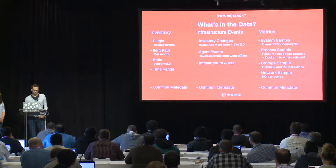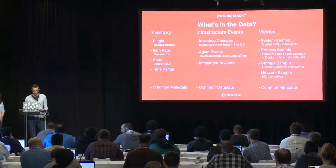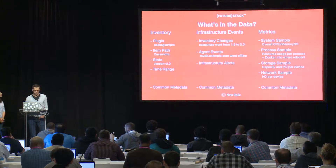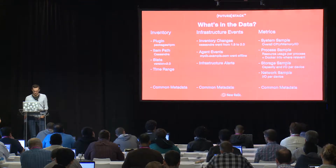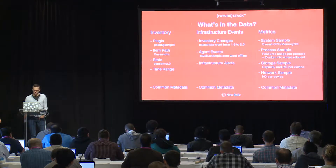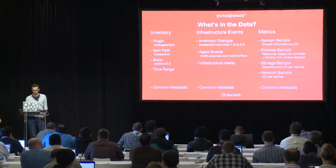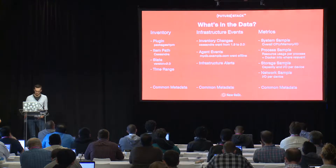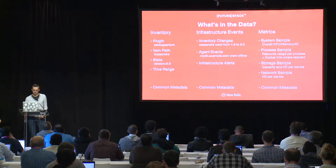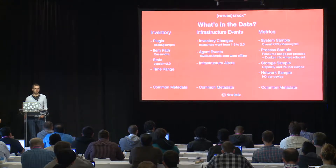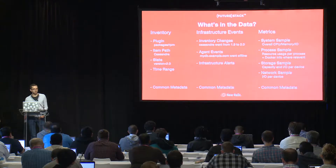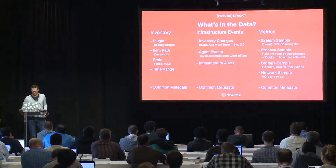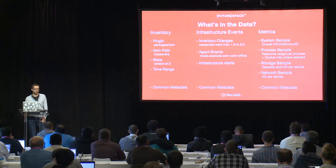Inventory covers things like the list of packages installed, the list of users logged in, what services are running, what updates are installed. For each of these we track it over time, so we know what was on your machine a week ago versus right now. Whenever any of that changes, we generate an infrastructure event. Infrastructure events are not only changes to state — for example, someone logged in, a package was installed, or a package version changed from 1.8 to 2.0 — but also anything else we see happening, such as agents going online or offline or alerts becoming active.